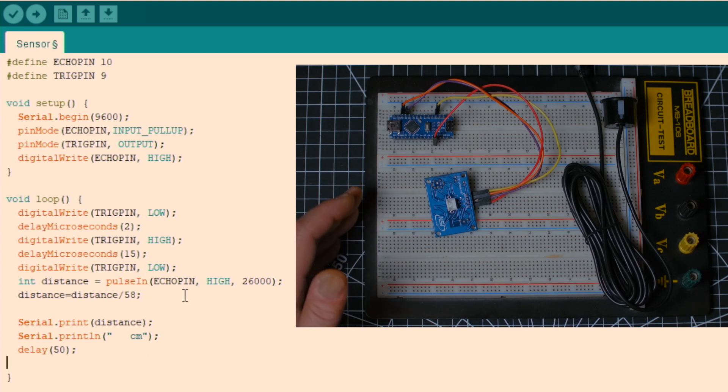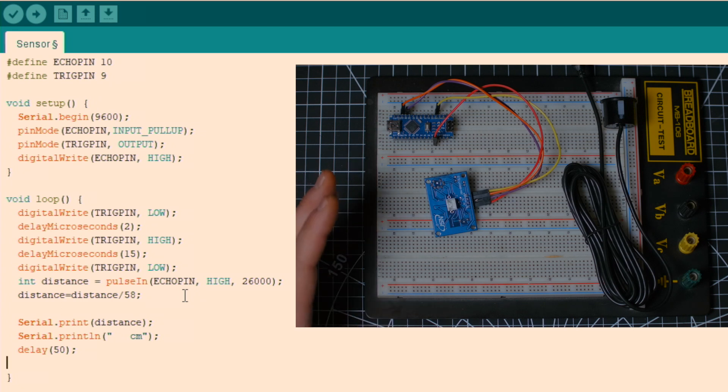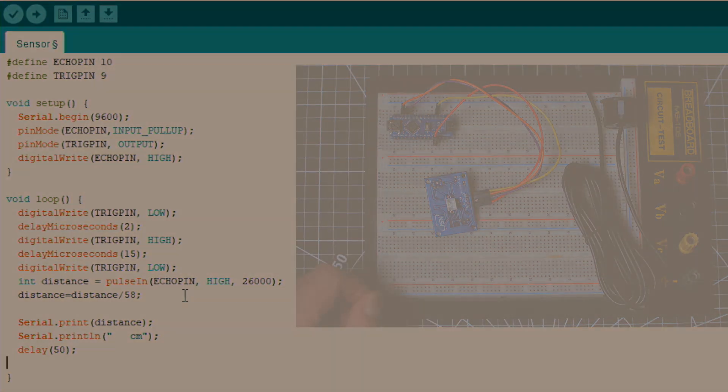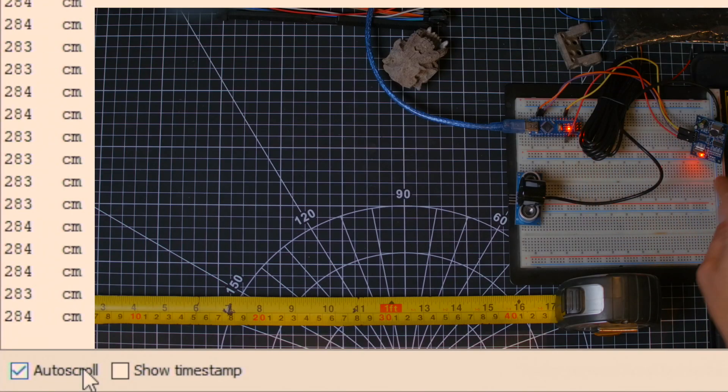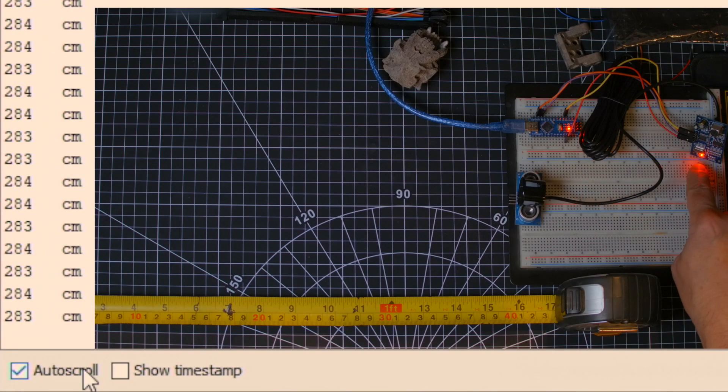I'm gonna upload it to the Nano right now and let's see how this new sensor behaves. Alright, so the code is uploaded to the Nano. It's getting power and the little sensor board shows a red light meaning it's also getting power.